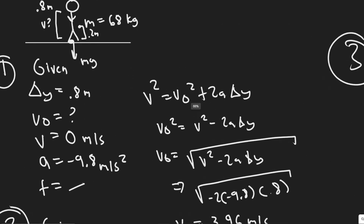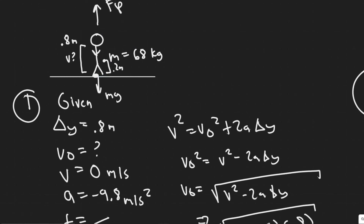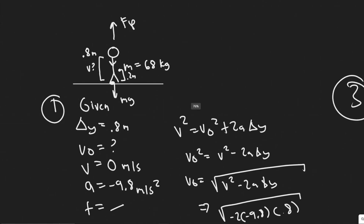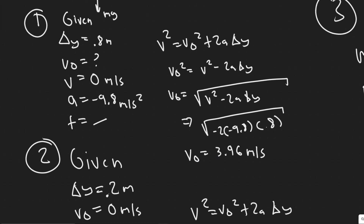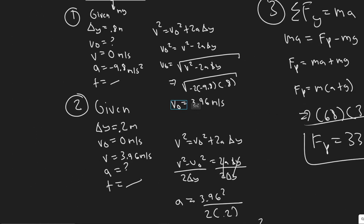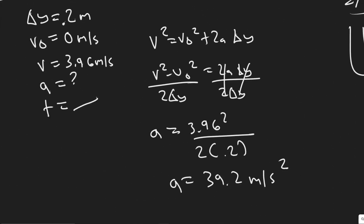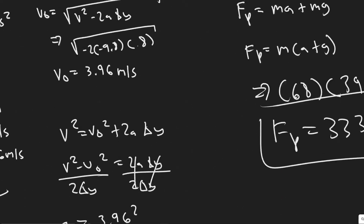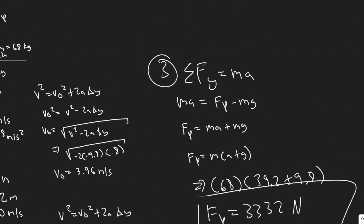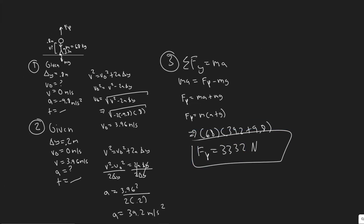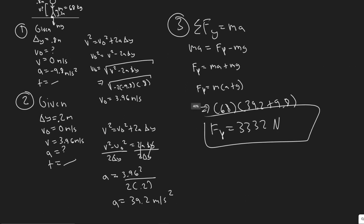To summarize: we found the velocity at the end of the 0.2 meter interval — which is the initial velocity right before the jump — using kinematics and the 0.8 meter rise. Then with that information we solved for the acceleration during the 0.2 meter crouching interval. Finally, we summed the forces and found that the pushing force equals m times (a + g), and it was just a matter of plugging in. That gives us our F_p answer. Hopefully you found this video useful.